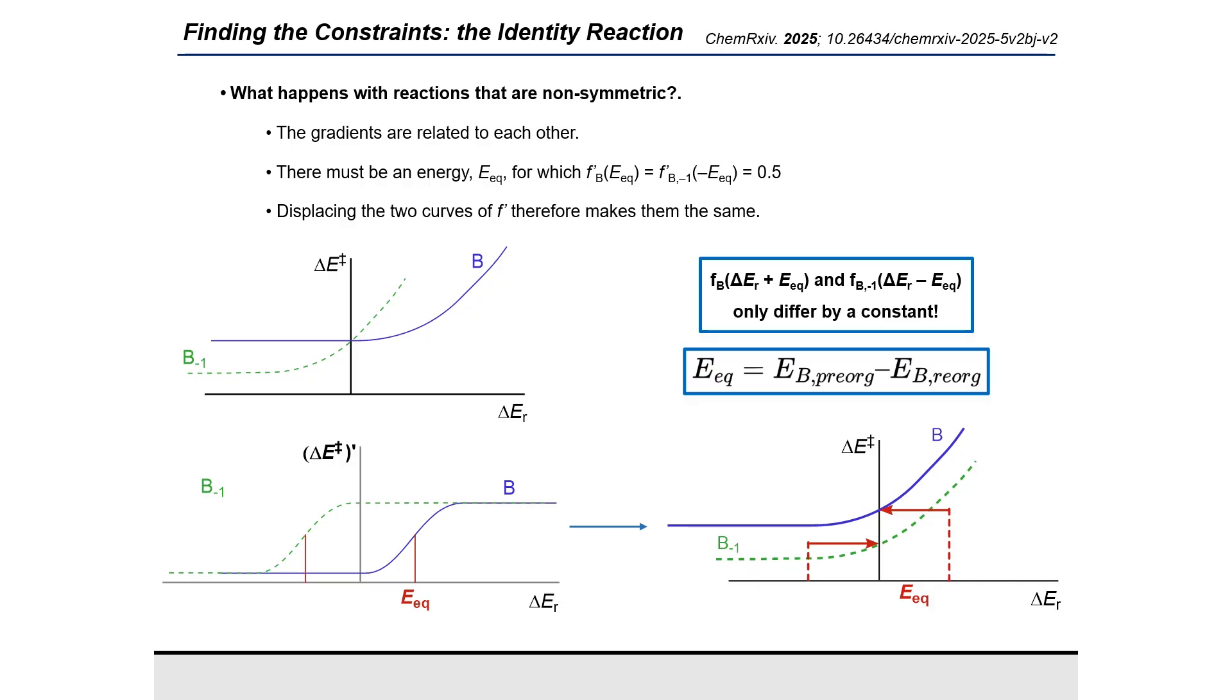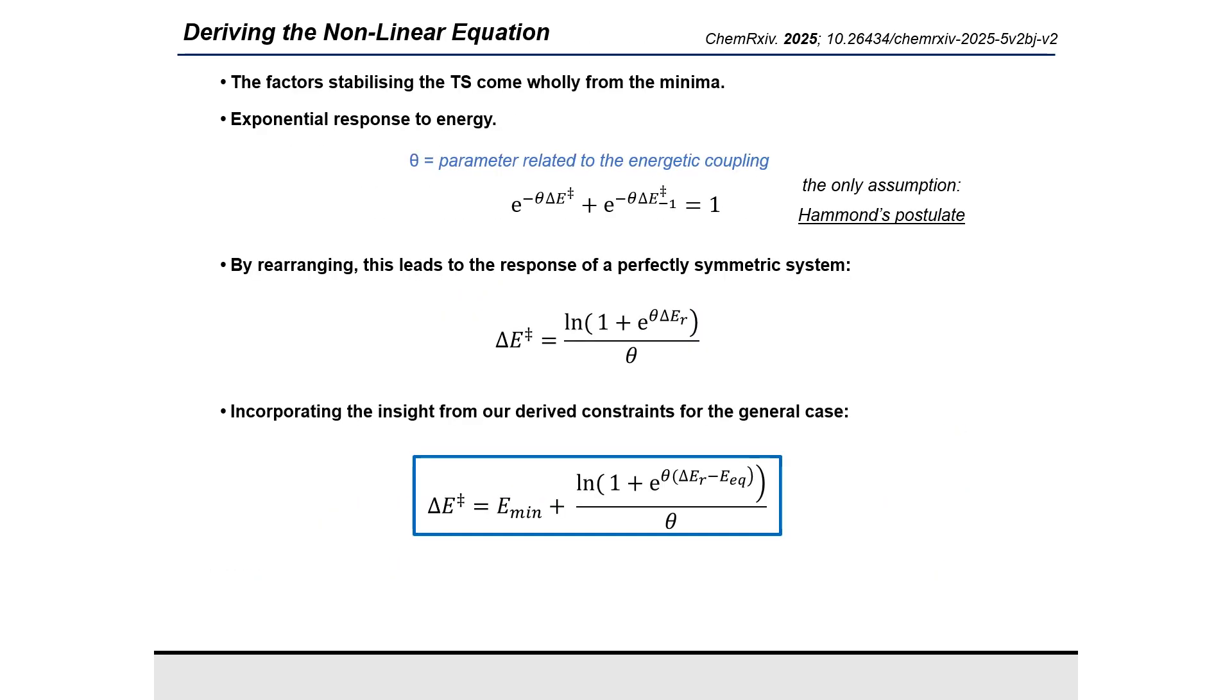We have now derived many of the properties that the function must satisfy. As the underlying assumption is that Hammond's postulate must hold true, we can express this as all stabilizing factors at the transition state coming from either the reactant or the product. And this can be seen as a sum of exponentials which is equal to one.